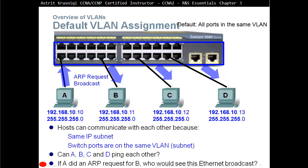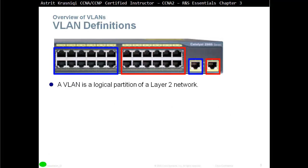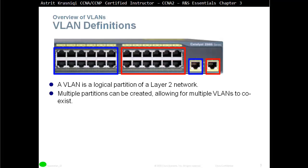That's one key reason we create VLANs — to reduce the broadcast domain so not all PCs are in the same broadcast domain. A VLAN is a logical partition of a Layer 2 network; multiple partitions can be created, allowing multiple VLANs to coexist. On a single switch you can create as many VLANs as you want — in this case we have two: a red VLAN and a blue VLAN — and ports are assigned to each.